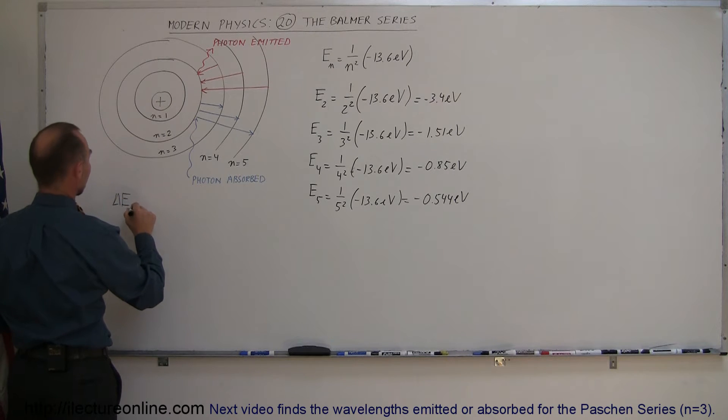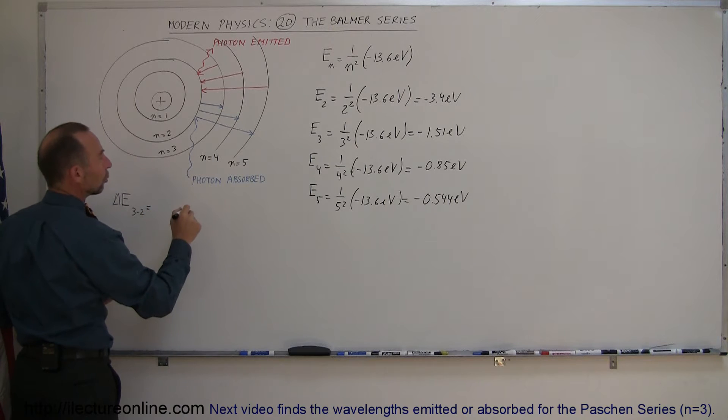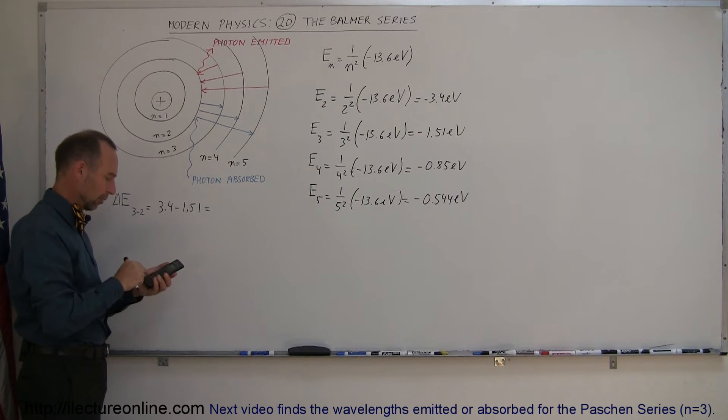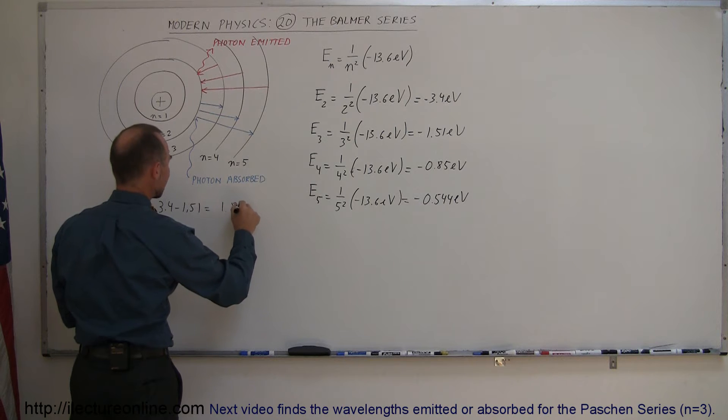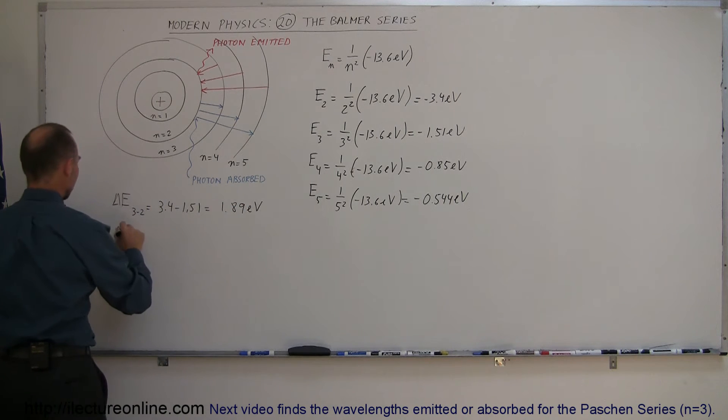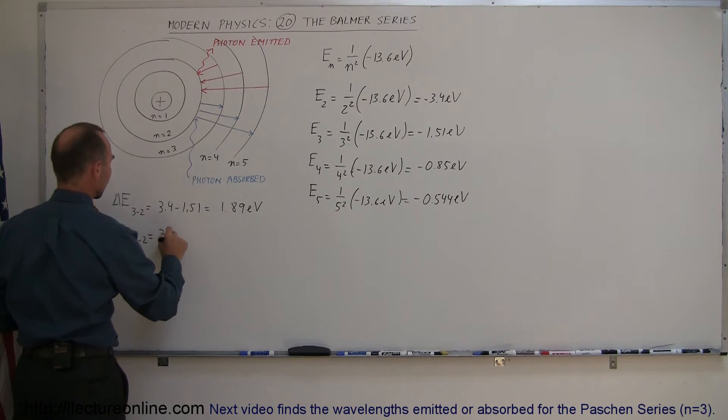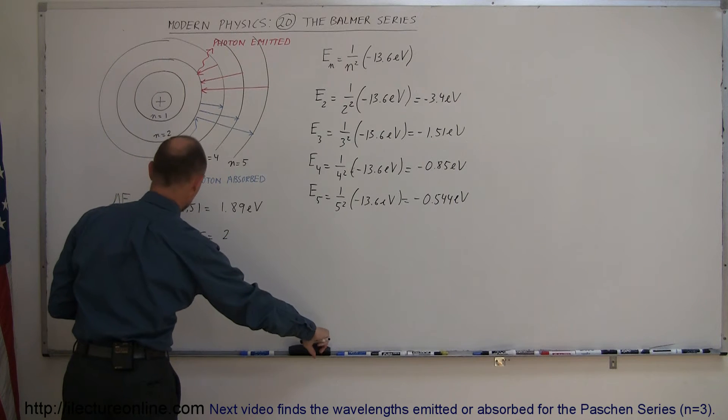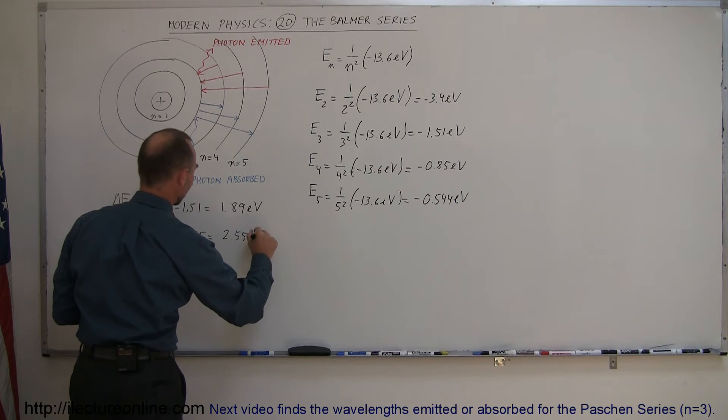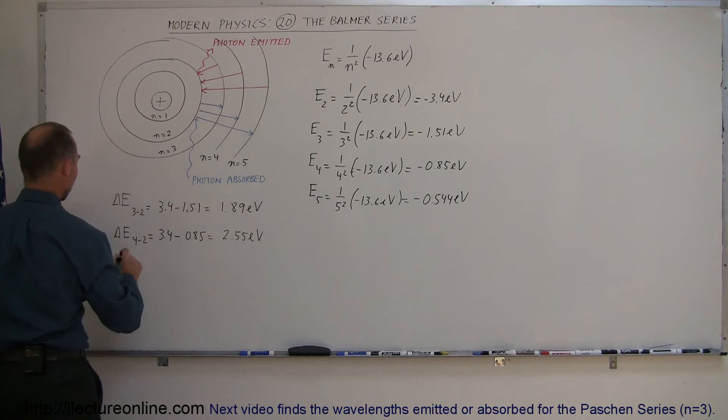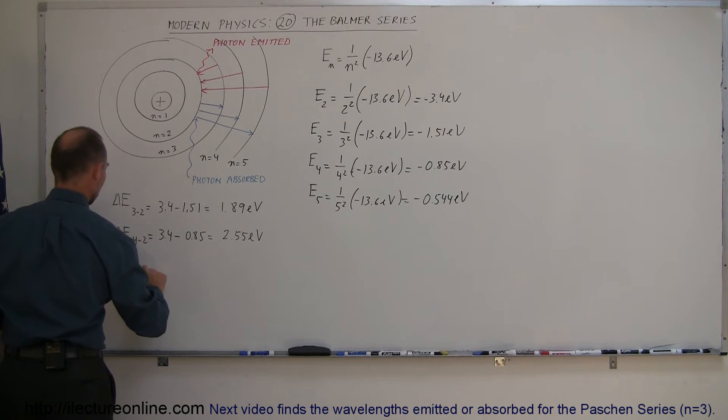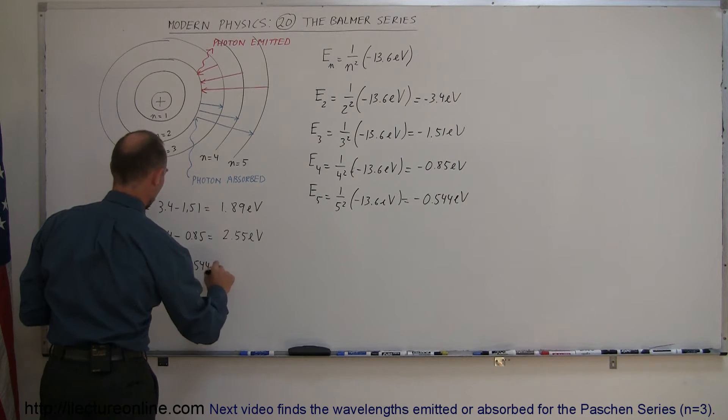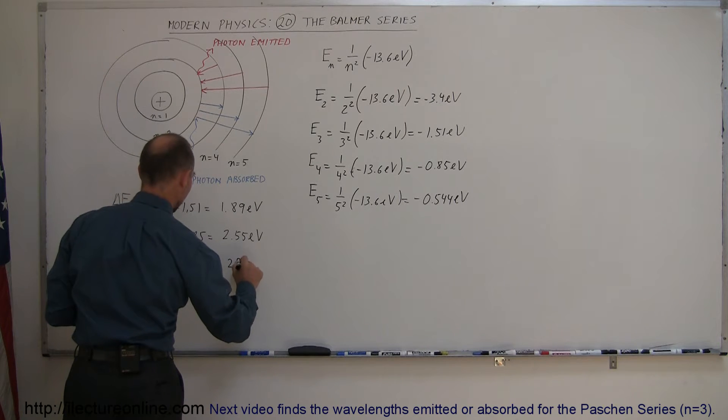So let's figure those out. The delta E going from 3 to 2 is equal to 3.4 minus 1.51, so that's 1.89 electron volts. The energy difference between level 4 and 2 is equal to 3.4 minus 0.85, and that would be 2.55 electron volts, because the energy level gets bigger and bigger as we've gone from higher and higher orbits.